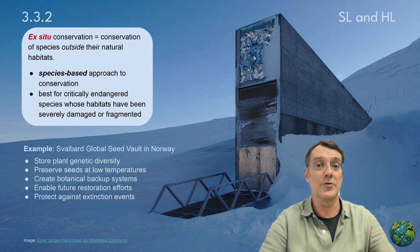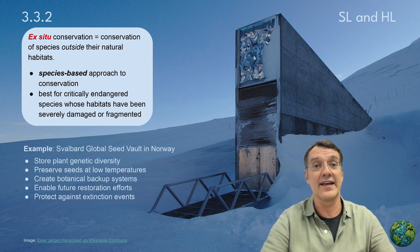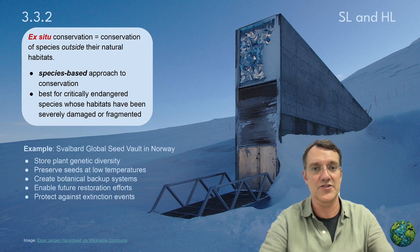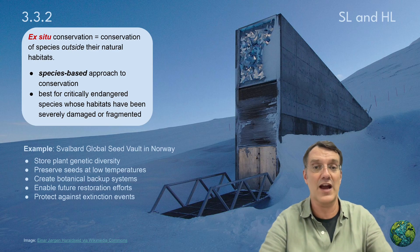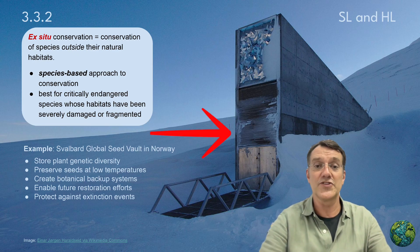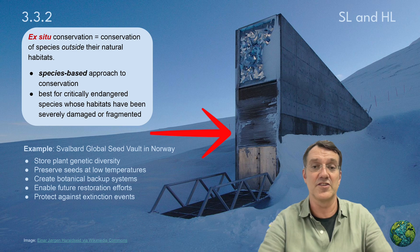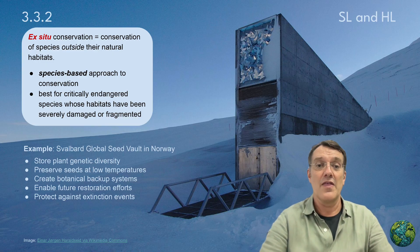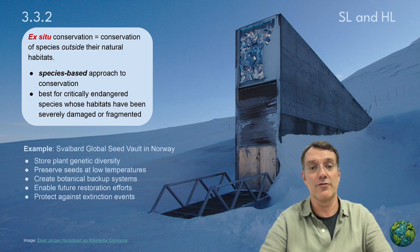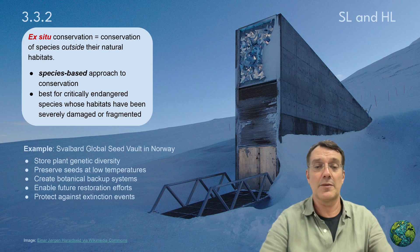Ex-situ conservation refers to protecting species outside their natural habitats — 'ex' meaning out of the situation. This species-based approach is particularly valuable for critically endangered species whose habitats have been severely damaged or fragmented. The Svalbard Global Seed Vault in Norway exemplifies this approach, storing plant genetic diversity at very low temperatures to create botanical backup systems that enable future restoration efforts and protect against extinction events.